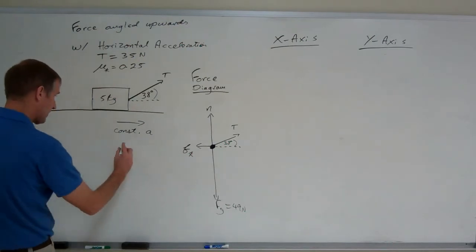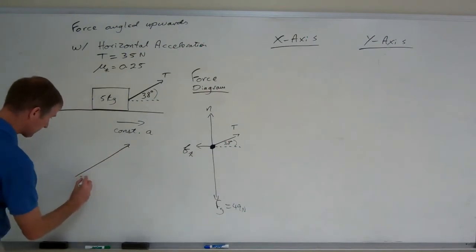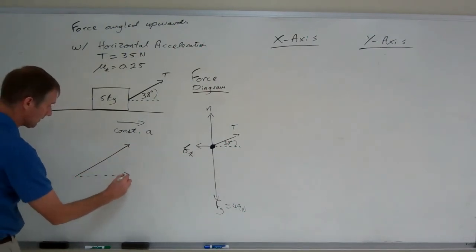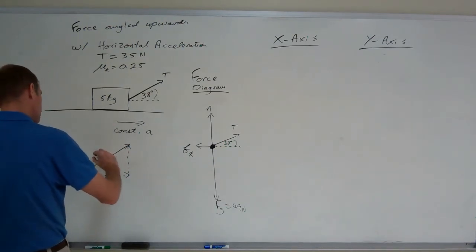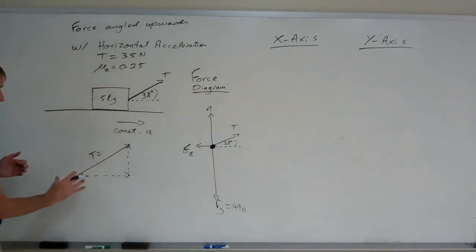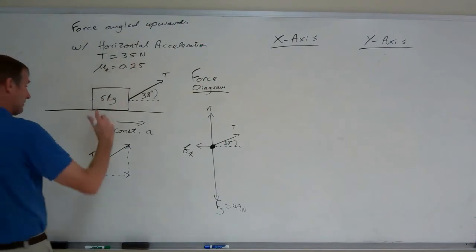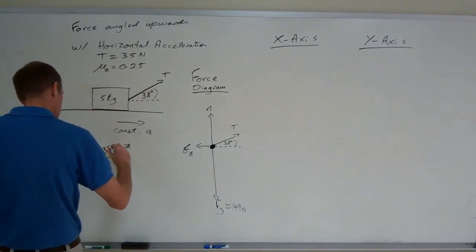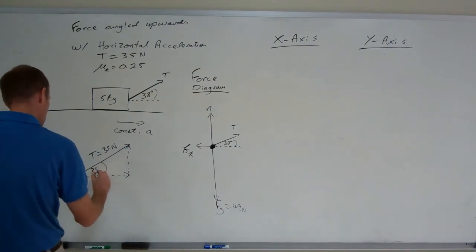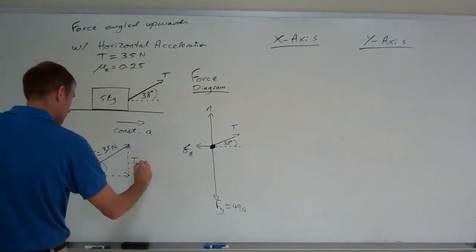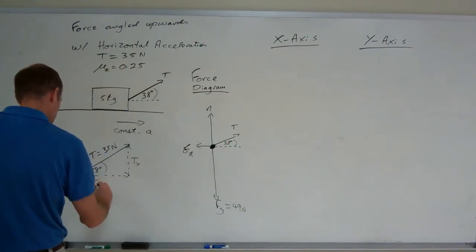I'm going to just draw it separately over here. Make it a little bit bigger. Remember that these really are arrows, not lines, because we're drawing vectors. So this is t, which represents the hypotenuse in this case, and that's 35 newtons. So our hypotenuse is 35. This is the angle of 38 degrees, ty, tx.